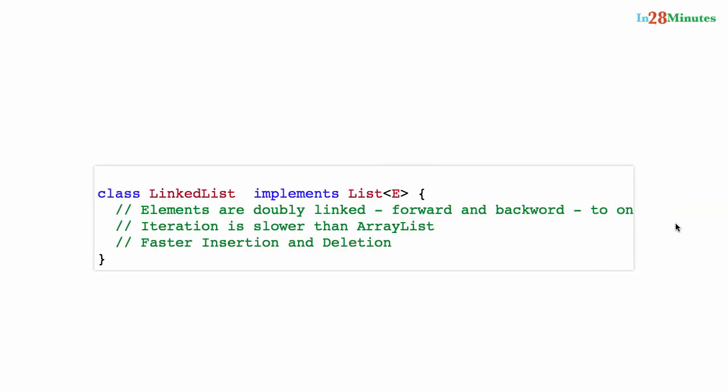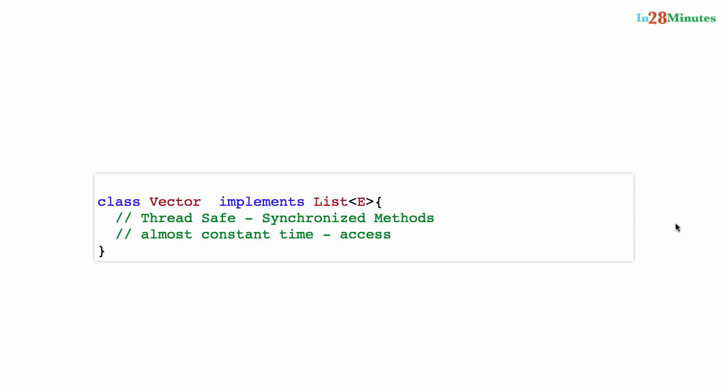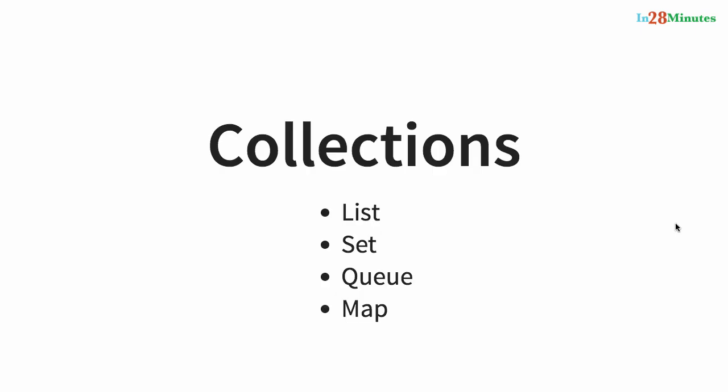We looked at three different implementations of the List interface. ArrayList uses array as the underlying data structure - insertion and deletion are slower compared to LinkedList, but accessing a specific element at a position is very fast. LinkedList uses a doubly linked list as the underlying data structure, so iterating and finding an element by index is slower than ArrayList, but insertion and deletion are faster. We also looked at Vector, which is a thread-safe implementation of a list using synchronized methods, though there is a performance impact in multi-threaded scenarios. In the next step, let's move on to the Set interface.